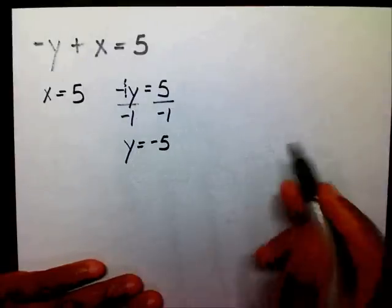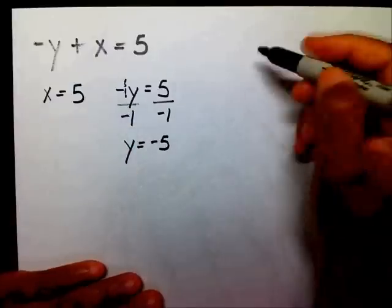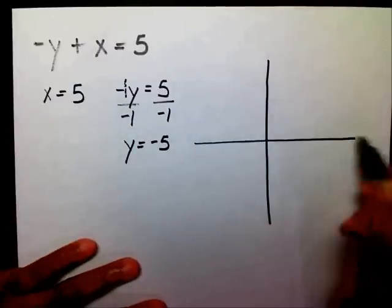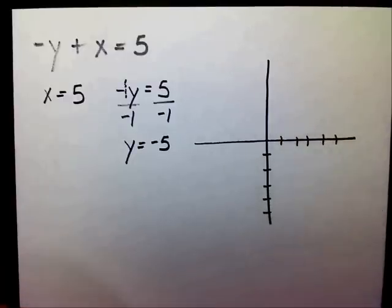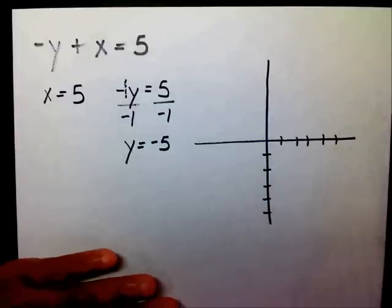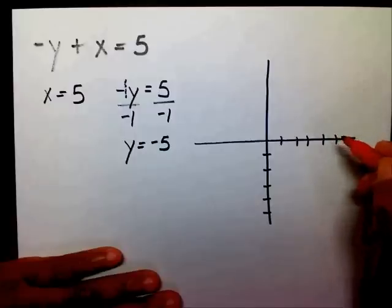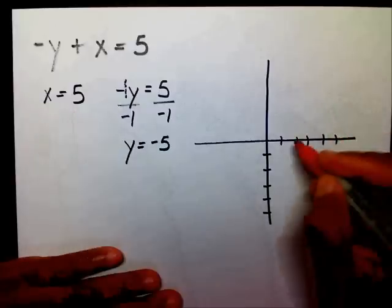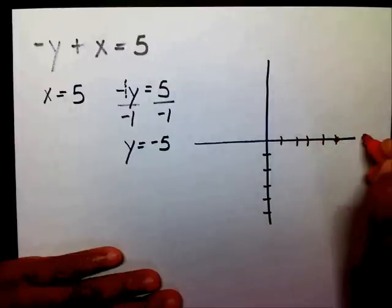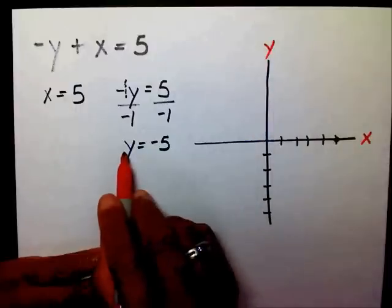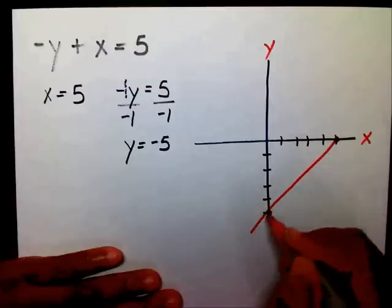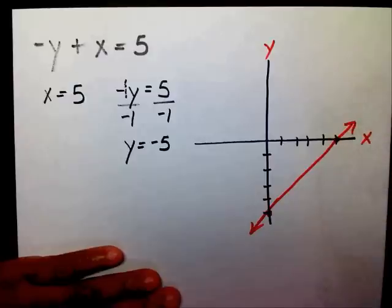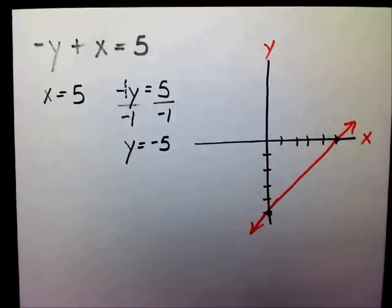So my x-intercept is 5 and my y-intercept is negative 5. I'm going to graph it. I'll put a dot on 5 on my x-axis, and on my y-axis I'll put a dot on negative 5. I'll connect these two — and there's my line using my x and y-intercepts.